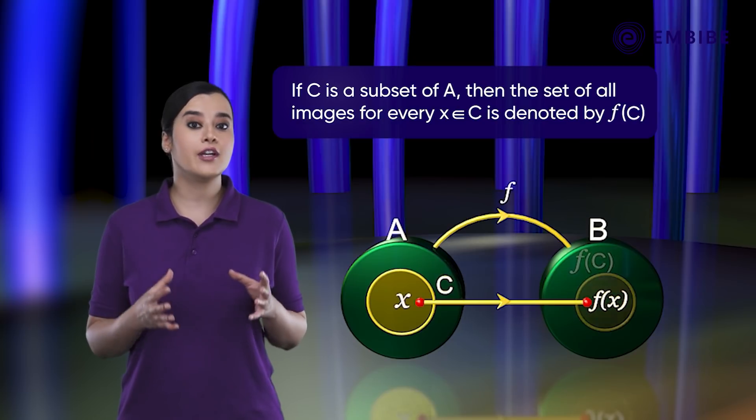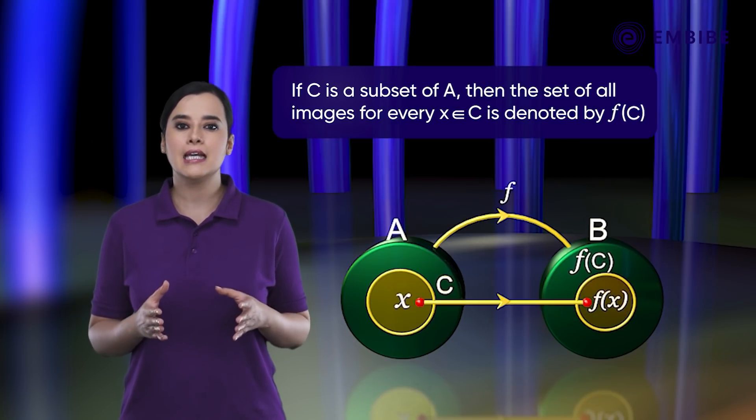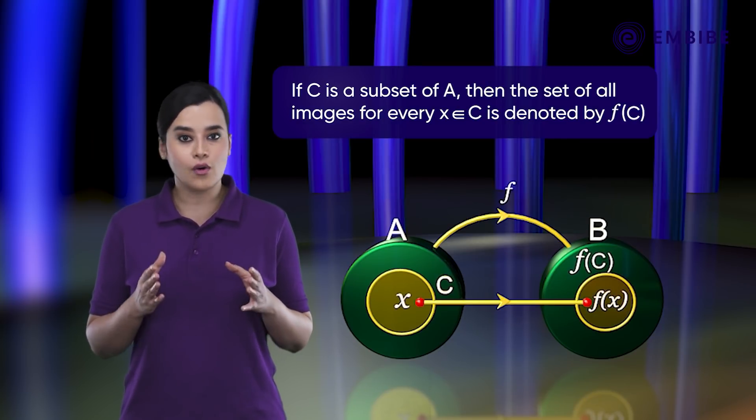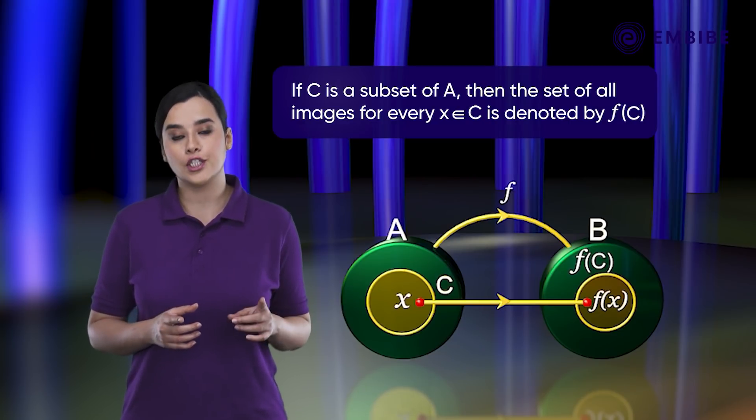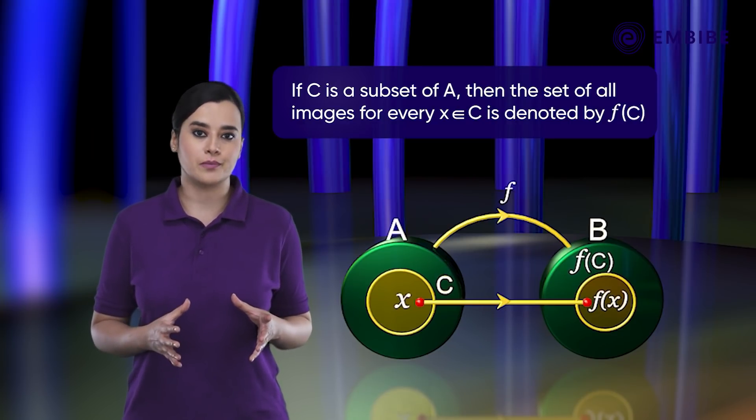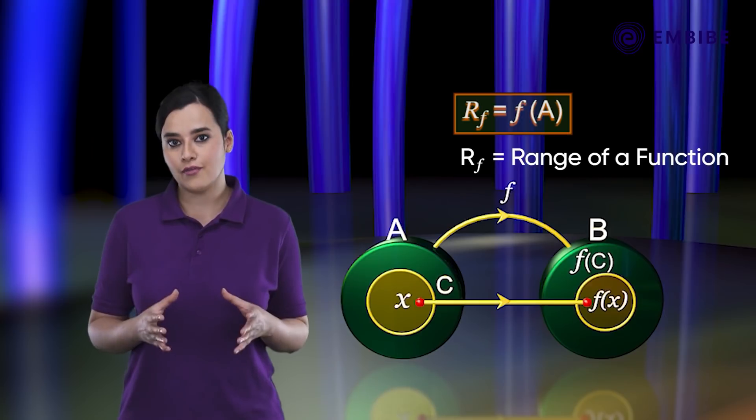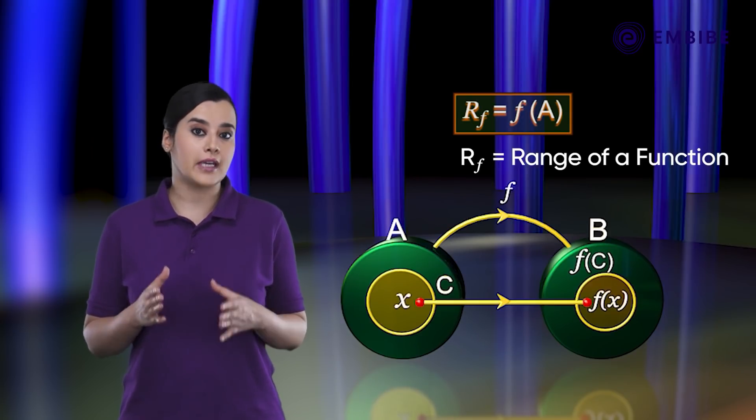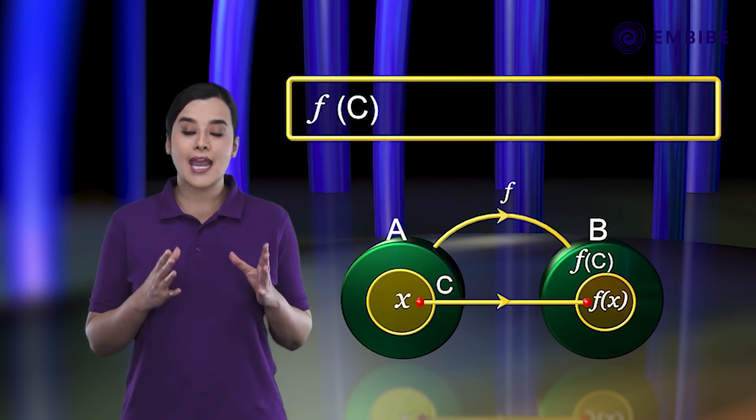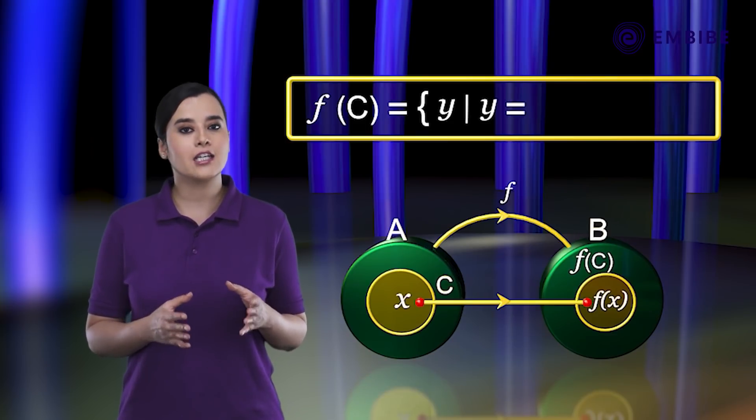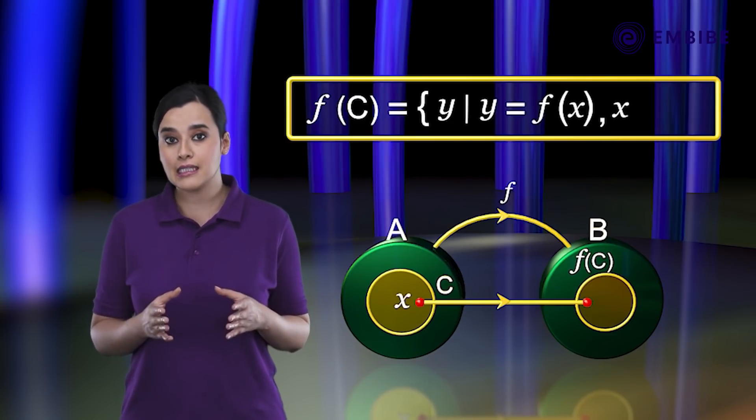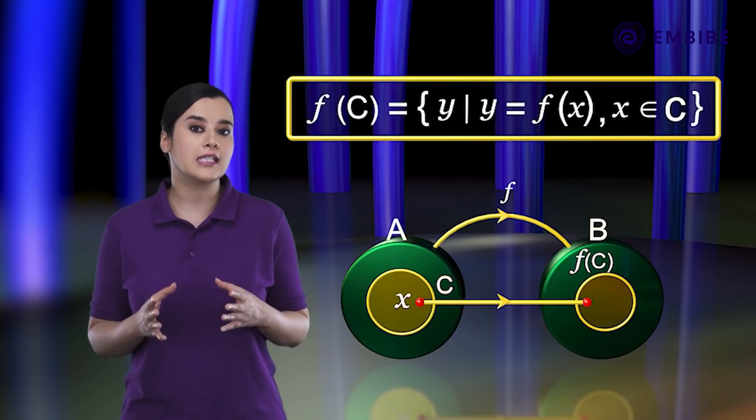Here, f(C) is only a notation and not a value of function. Thus, r_f is equal to f(A). In general, f(C) = {y such that y = f(x) where x belongs to C}.